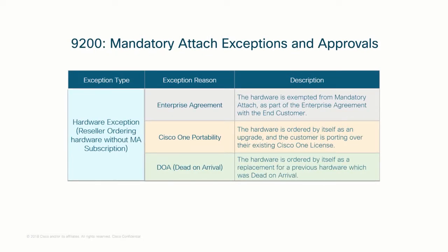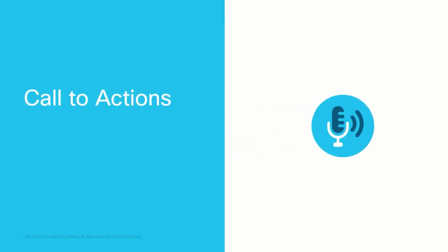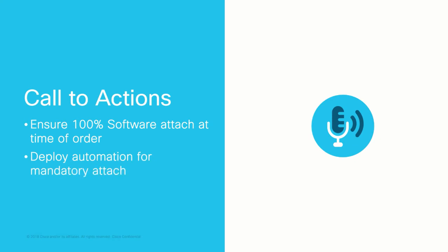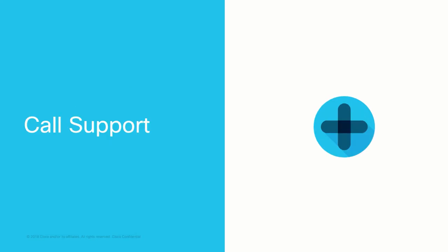Here is a quick look at a few hardware exception scenarios when you do not have to attach Cisco DNA subscription to the hardware. By FY20, the majority of the switching, wireless, and routing products will move towards the mandatory attach business model. Hence, please ensure 100% of your mandatory software orders are attached to hardware at the time of order. Also, build the required automation for mandatory attach software orders to supplement the scale of growth.